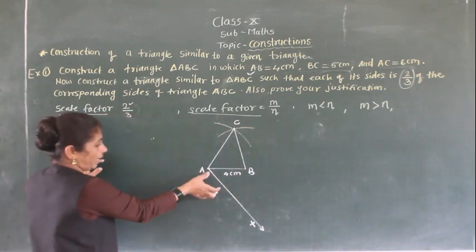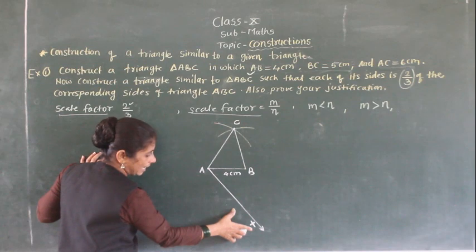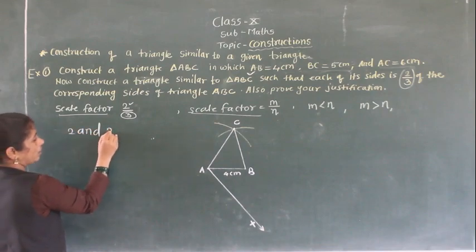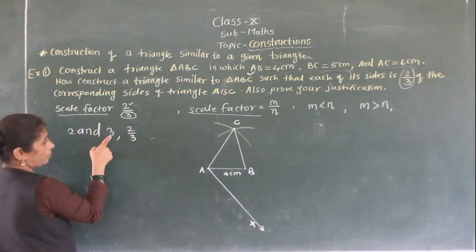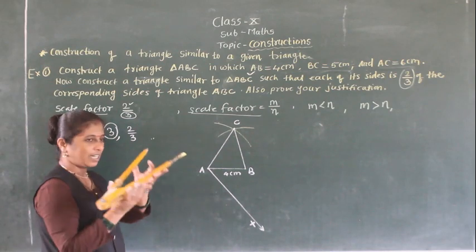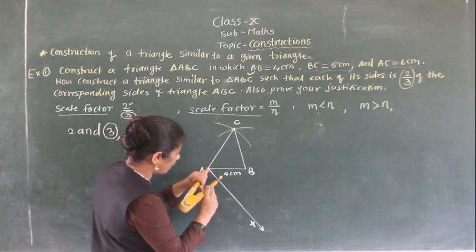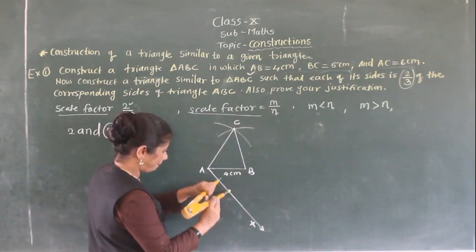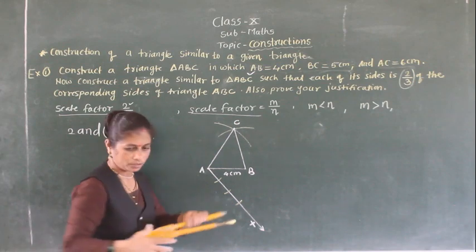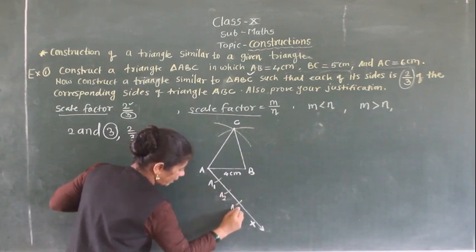We have to make arcs on ray AX. From the scale factor 2/3, which is the greater number? Three is the greater number, so we make that many marks. Take any convenient distance in your compass and mark off three points on ray AX: A1, A2, and A3, where AA1 equals A1A2 equals A2A3.